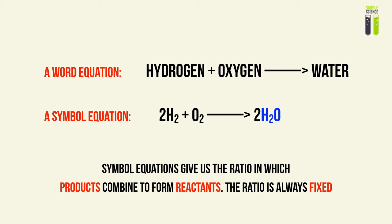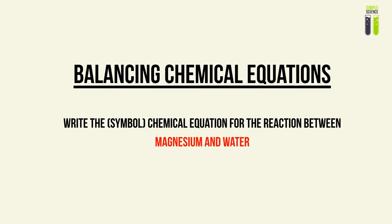The very important thing is that the ratio between atoms is always fixed — this will be critical in solving stoichiometry questions. To demonstrate my recommended method, I'll walk you through an example: the reaction between magnesium and water.